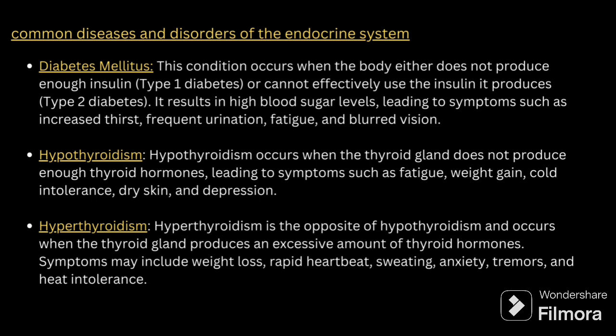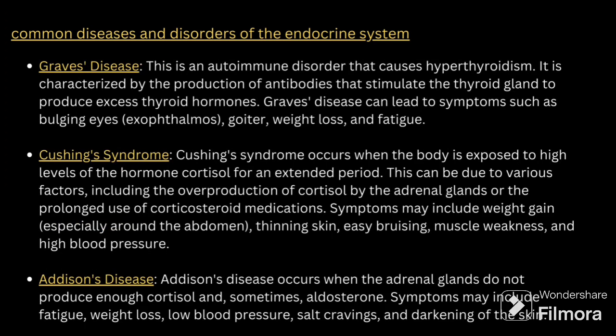The next condition related to the endocrine system is Graves' disease, which is an autoimmune disorder that causes hyperthyroidism. It is characterized by the production of antibodies that stimulate the thyroid gland to produce excess thyroid hormone. Symptoms include goiter, weight loss and fatigue. Cushing's syndrome occurs when the body is exposed to high levels of cortisol for an extended period, due to factors such as overproduction of cortisol by the adrenal gland. Symptoms include thinning of skin, easy bruising, muscle weakness and high blood pressure.